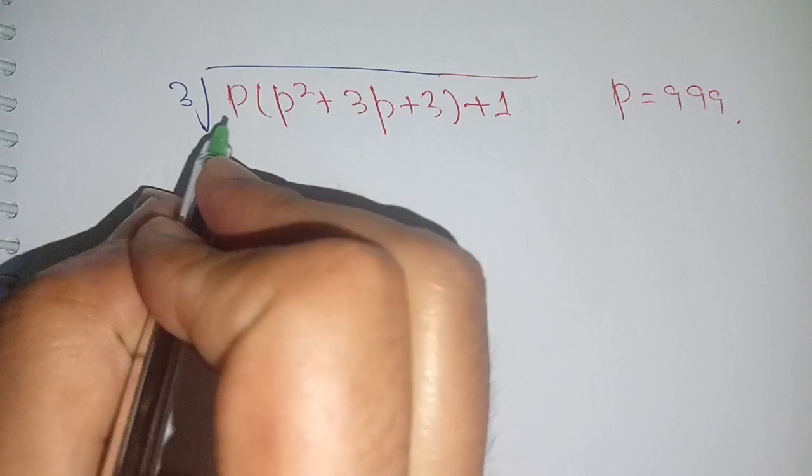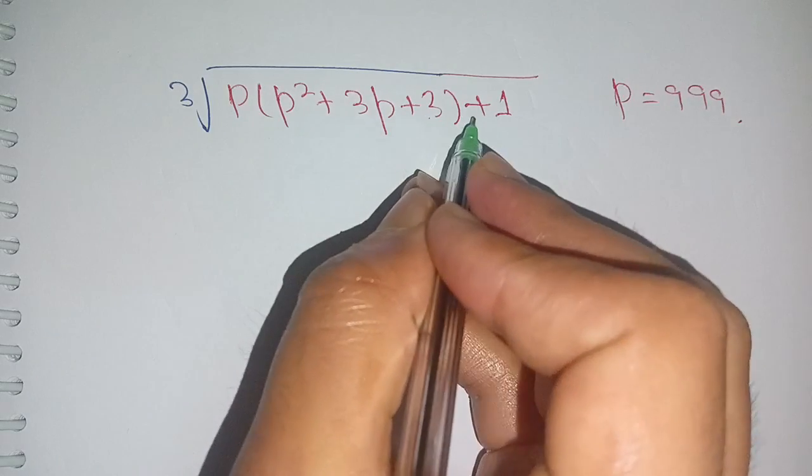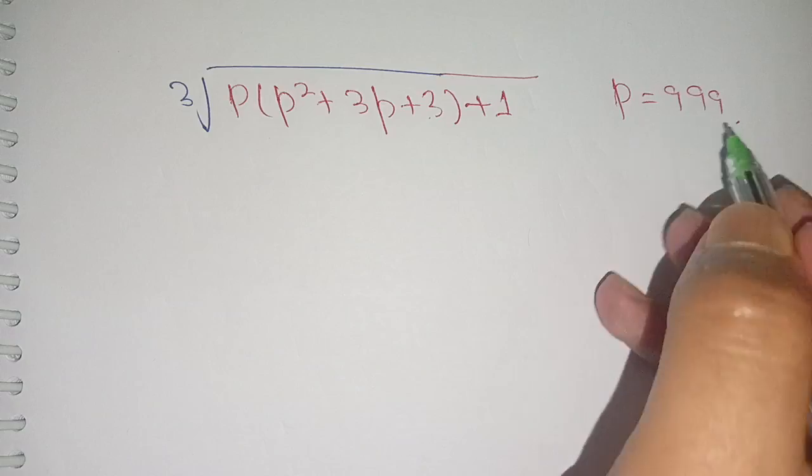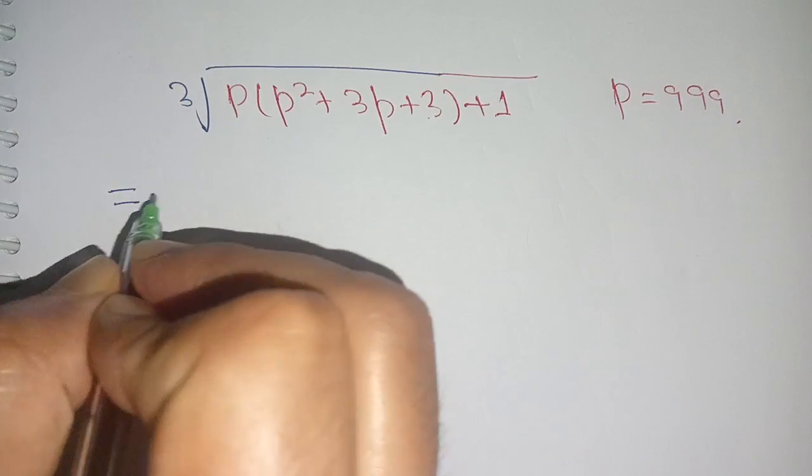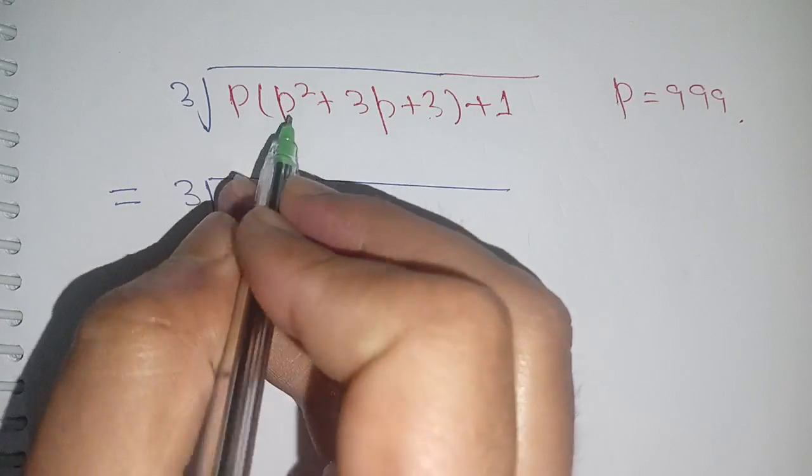Hello everyone, how to calculate cube root of p times (p² + 3p + 3) + 1 for p equals 999. Let us solve this. We can write this as cube root of p times p².